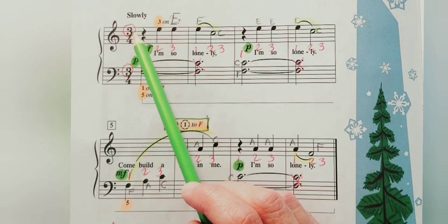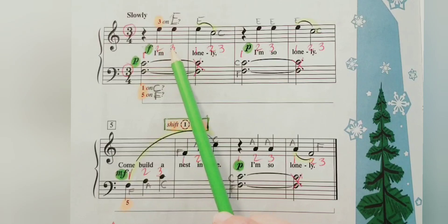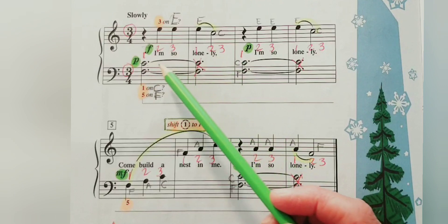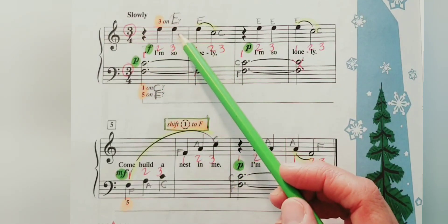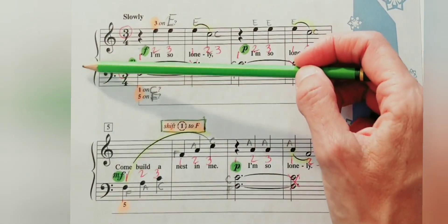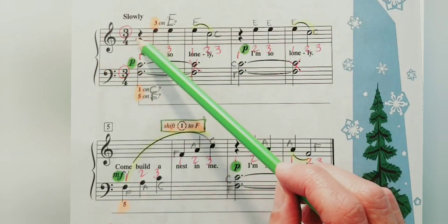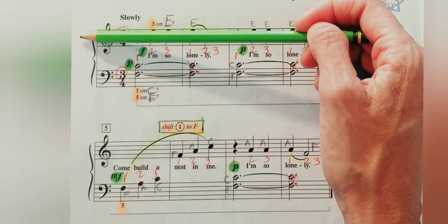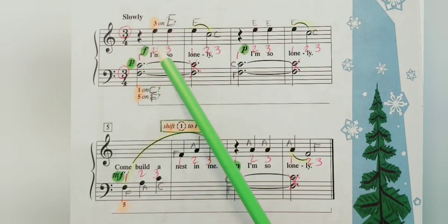You have your top number of the time signature, number three. You can circle that and write your counts: one, two, three. Remember how important it is writing your counts in the middle of the piece, so you can grab the counting for the bass clef notes and also for the treble clef notes. Whenever you cover your bass clef side you still have the counting for right hand. If you cover the right hand side you have the counts for the dotted half note.